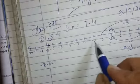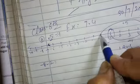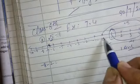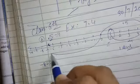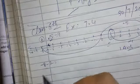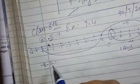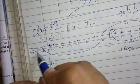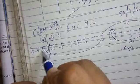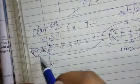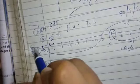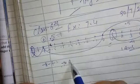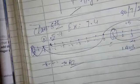तो पहले हम 0 से किस step के साथ move किए? Minus 8 की side move किए. फिर इन्होंने again minus 2 दिया है, तो 2 steps आगे और move किए. तो हम किस पर आके पहुँचे? Minus 10 पर. So minus 10 is our answer.